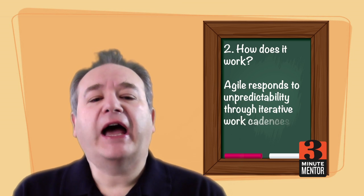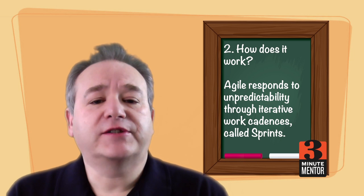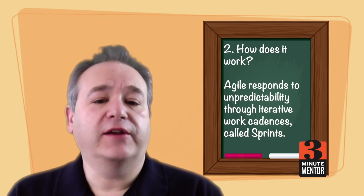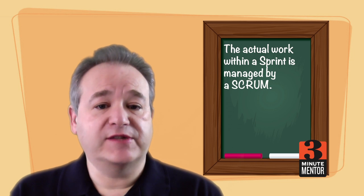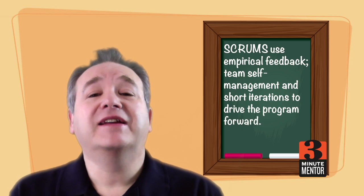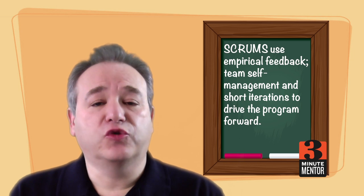How does it work? Agile responds to unpredictability through iterative work cadences known as sprints. After each of these sprints, the teams must have a potentially shippable product or at least some incrementally working function. The actual work within the sprint is managed by something called a scrum. These scrums use empirical feedback, team self-management, and short iterations to drive the program forward.